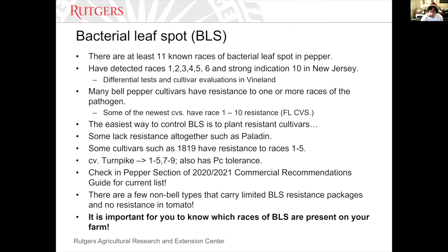Just as a review — in New Jersey we have at least all 10 races present. Many of your bell pepper cultivars now have resistance to one or more races of this pathogen. It's very important that you know what races of the pathogen you have on your farm, because if you're growing a bell pepper variety that doesn't carry resistance to a certain race and you have that race, that cultivar is not going to help you much. The easiest way to control BLS is with resistant cultivars.